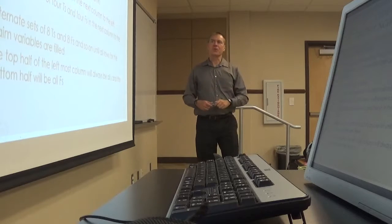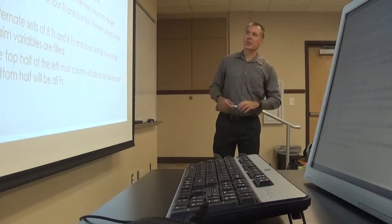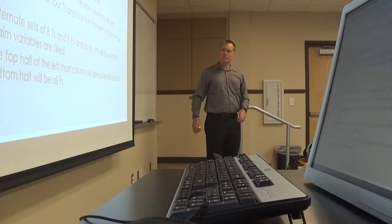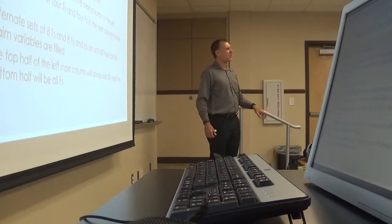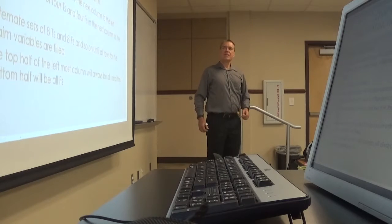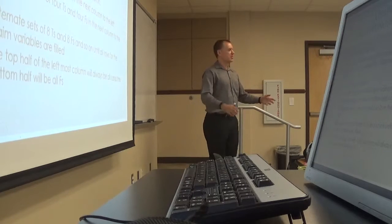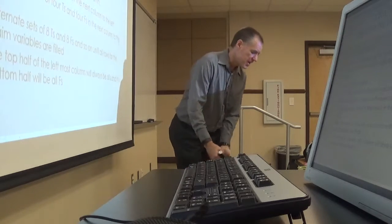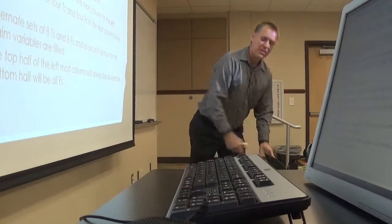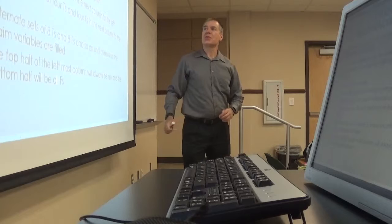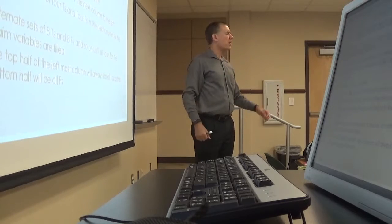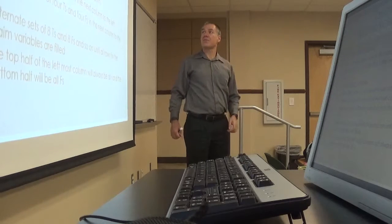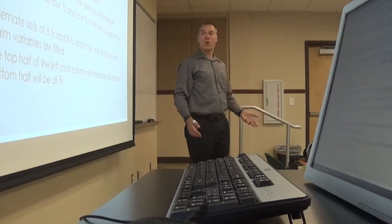Last time we were looking at truth-functional logic and how to build truth tables. We saw that with the rows, the handy thing is a nice, very simple little equation where the number of rows is always 2 to the N, where N is the number of claim variables, and that gives you the number of rows.